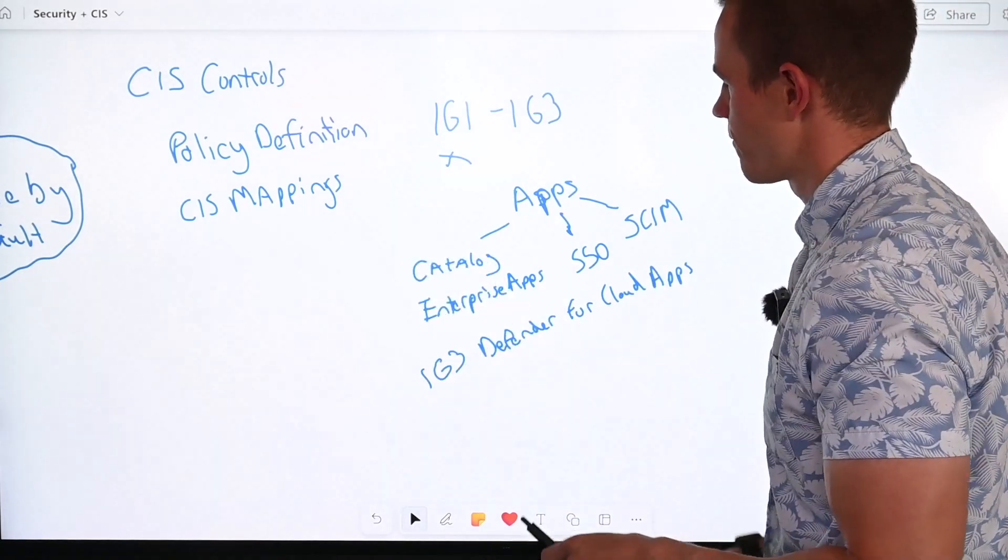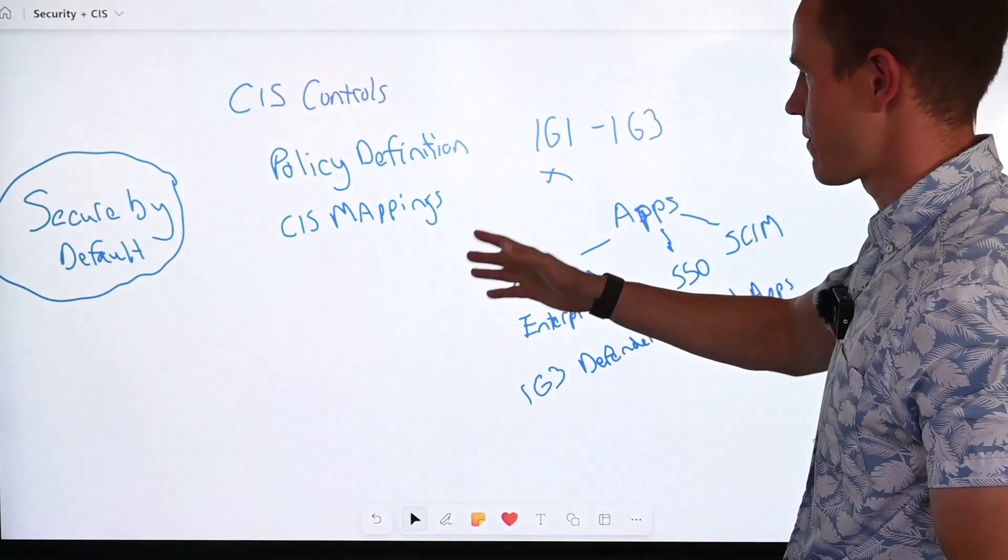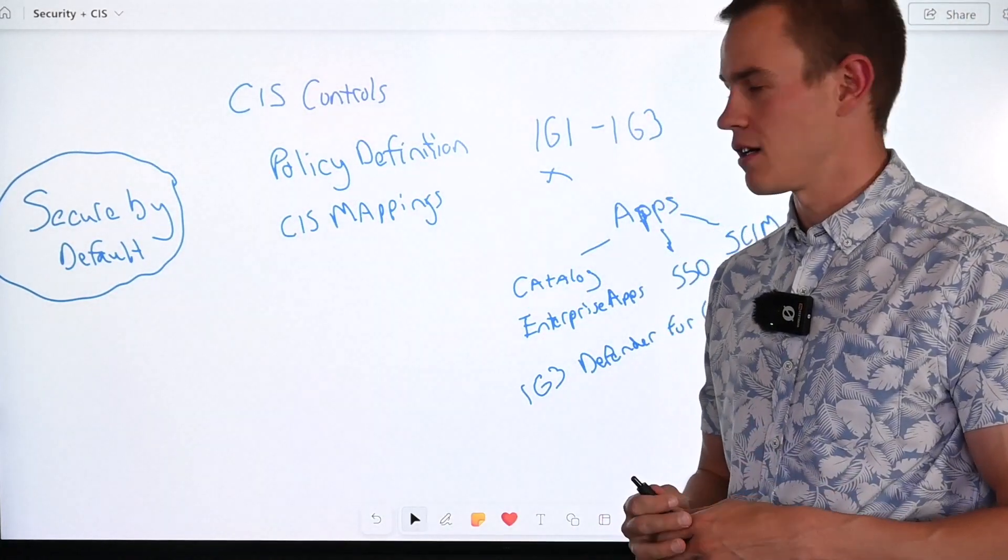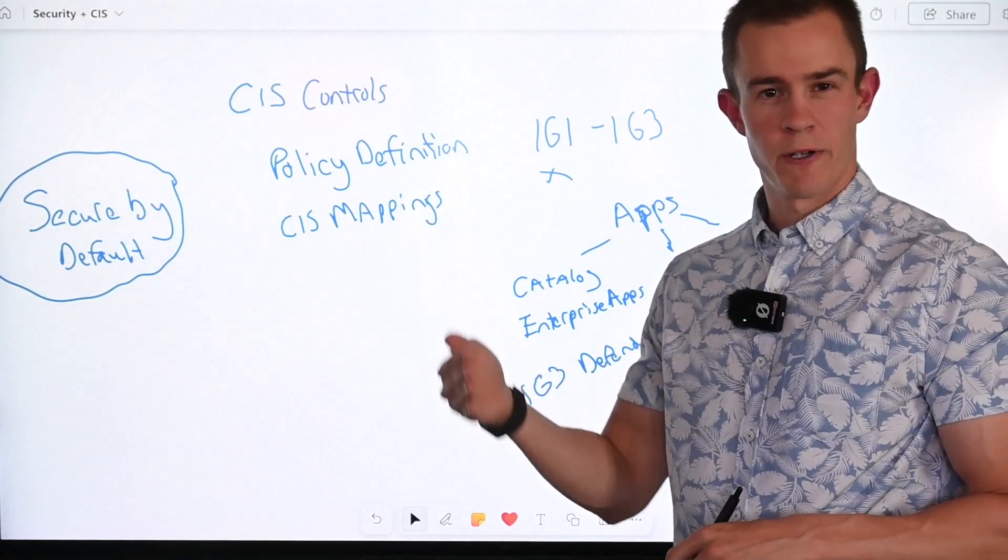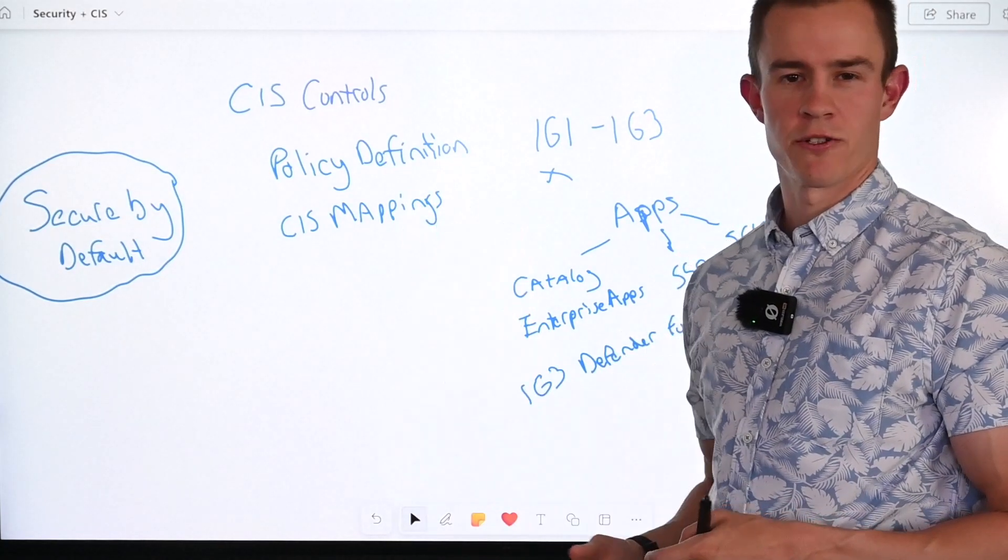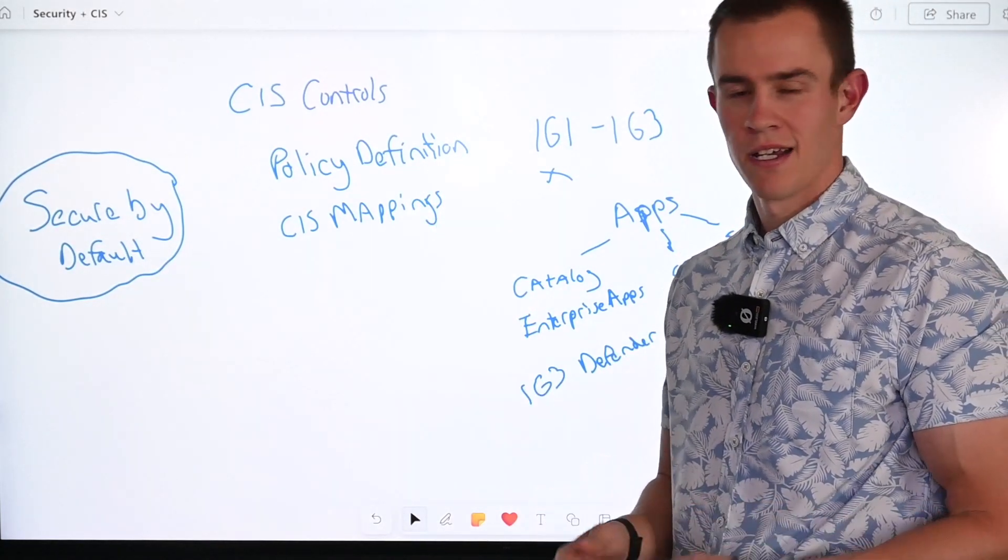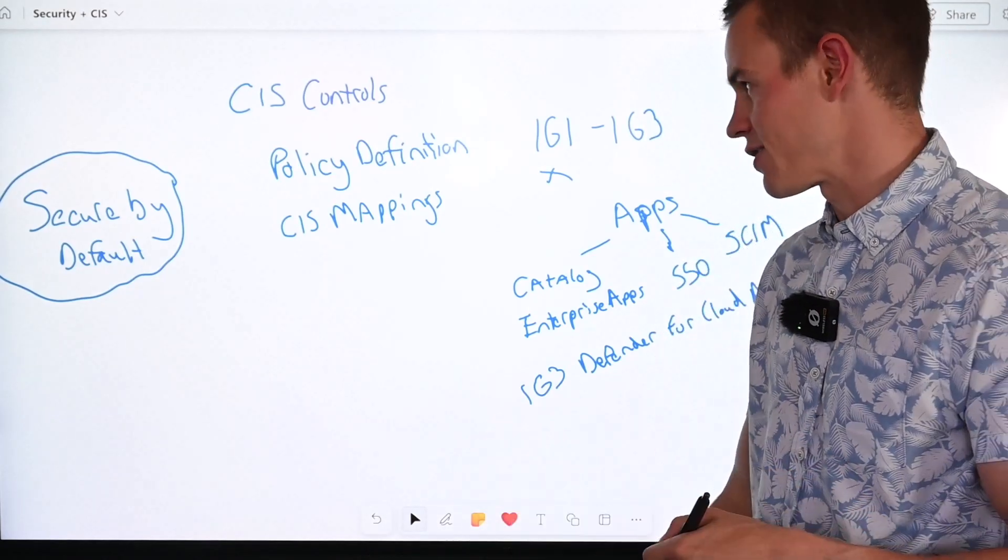So all of this flows into the CIS mappings again. I like that because it gives us a sense of priority on the things that we should be doing. We could filter out for IG1s to make sure all those are complete in our customer environments, and work on another phase for the IG2, IG3.